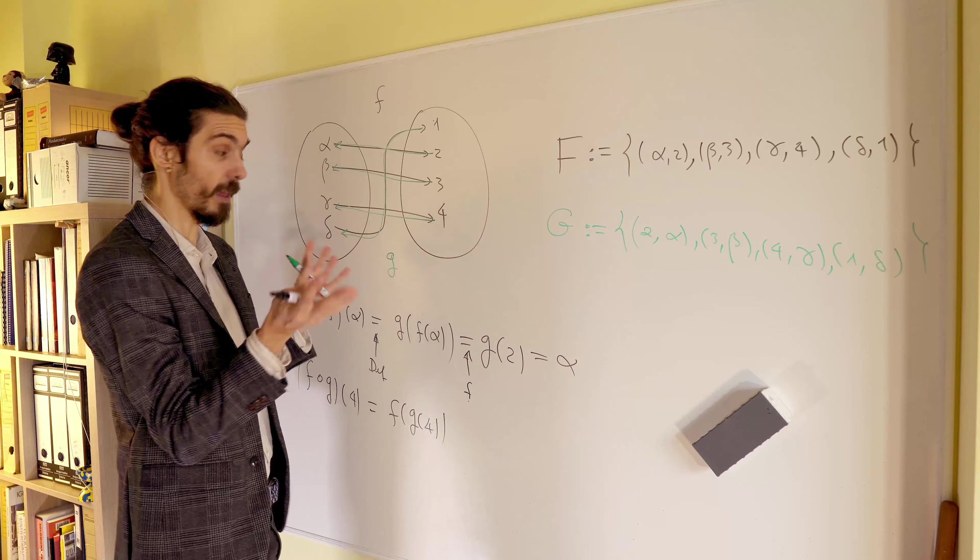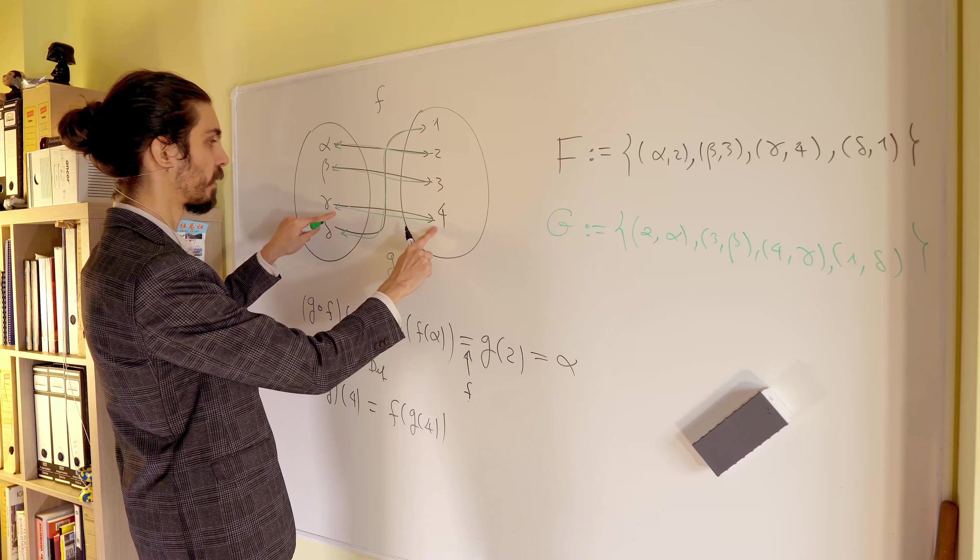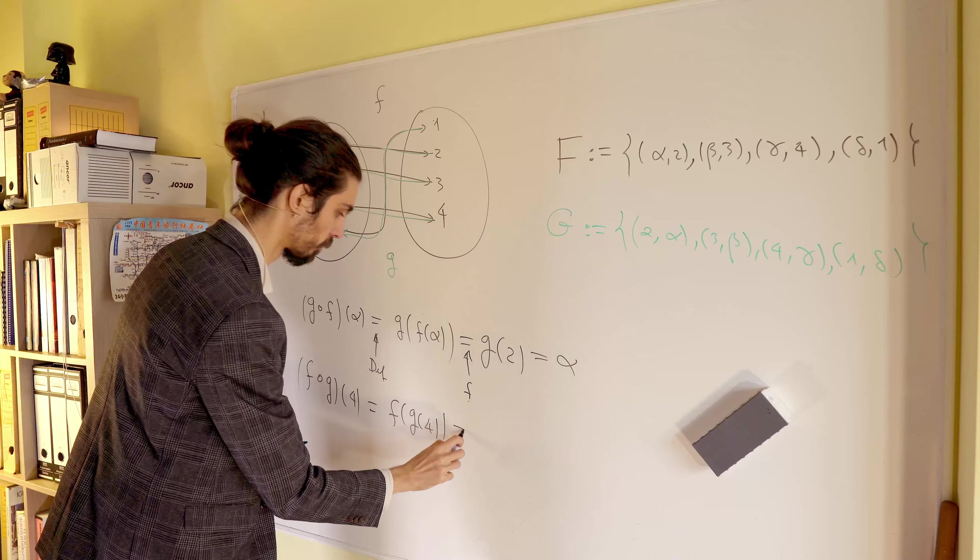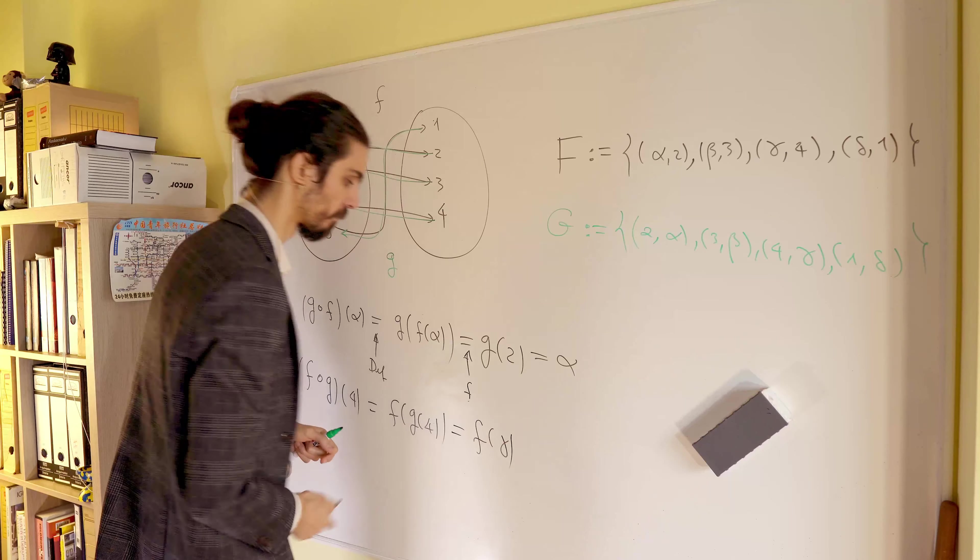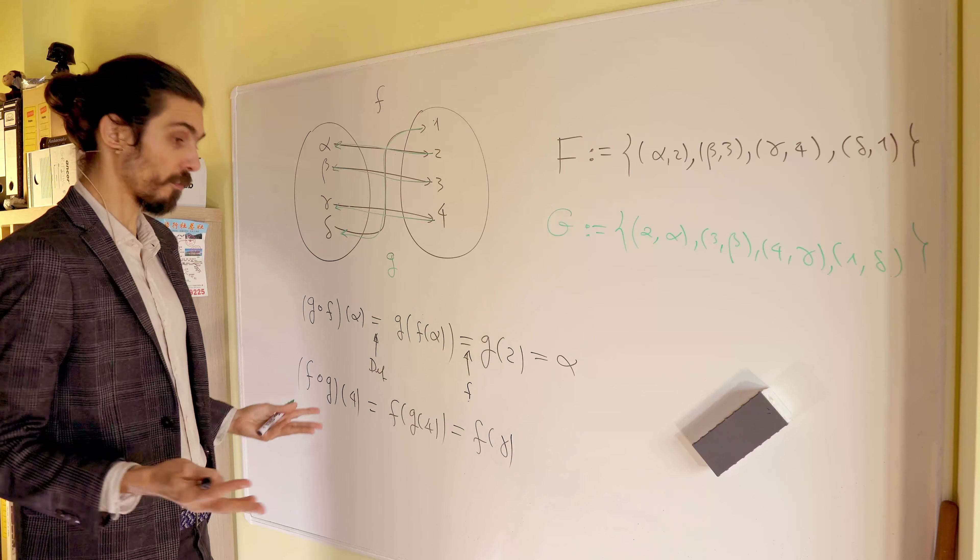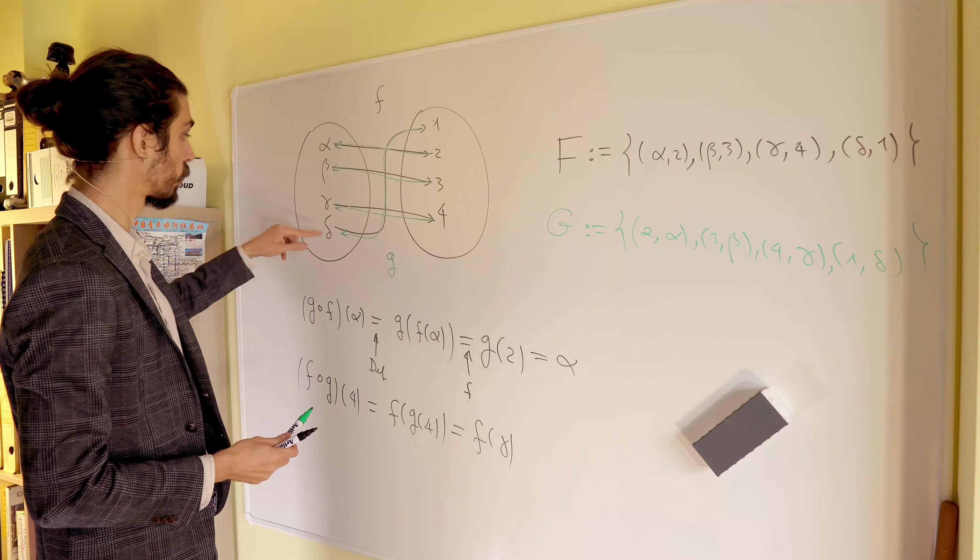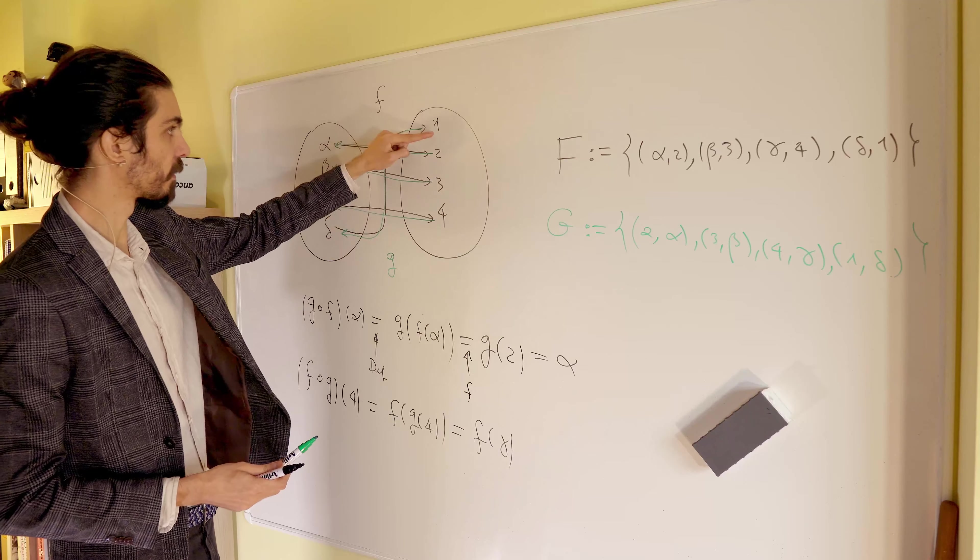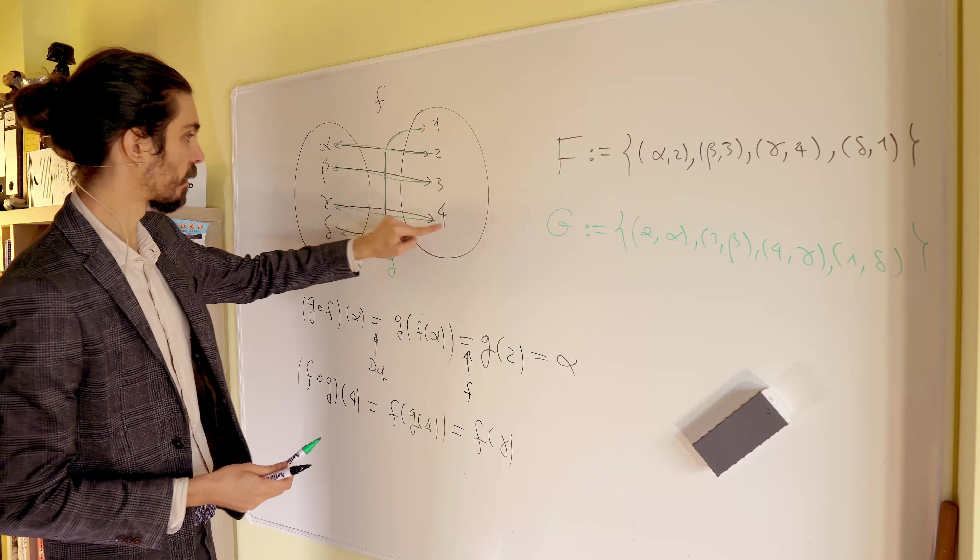Now, g of 4, let's look at the diagram of g. And we follow exactly the green arrow. And to 4, we assign gamma. So f, f of gamma. But what is f of gamma? Well, again, follow the arrows, because we know the two functions explicitly. And we get, you get here, the 4 again.